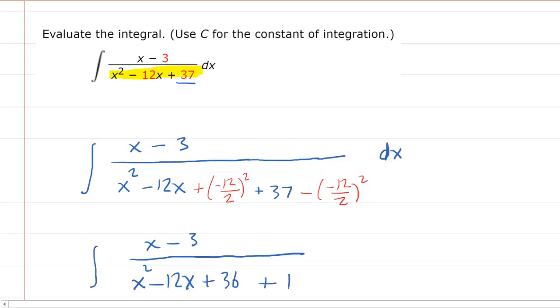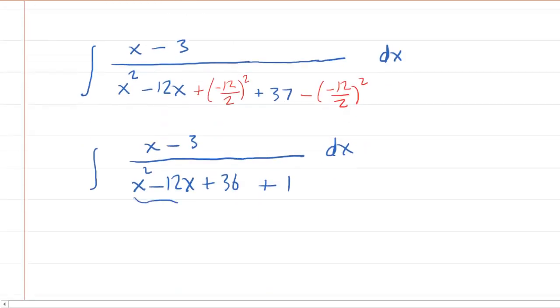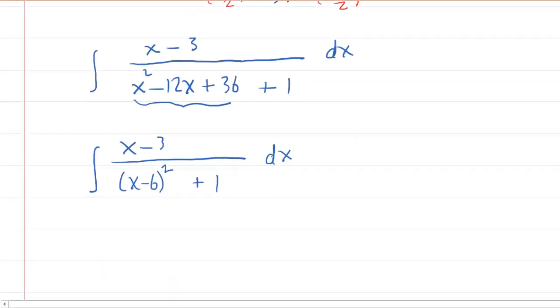Now look carefully at what we've done. And you can see that we've created a perfect square trinomial. And what that means is it can factor. So that actually factors as x minus six times x minus six. In fact, why don't we be a little more succinct and just write that as x minus six squared, and then you still have your plus one.